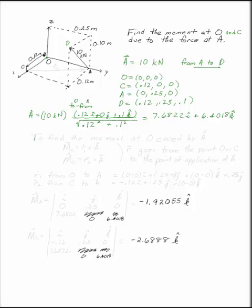To find the moment at O or at C, in either case the moment is going to be R cross A, but we are going to have different values for R. R is the vector that goes from the point we're taking the moment about, so in this case either O or C, to the point of application of A.